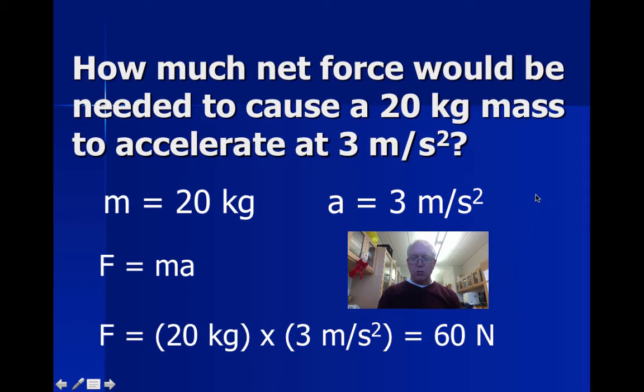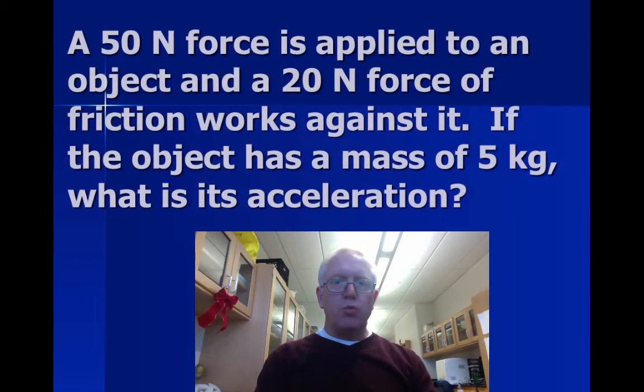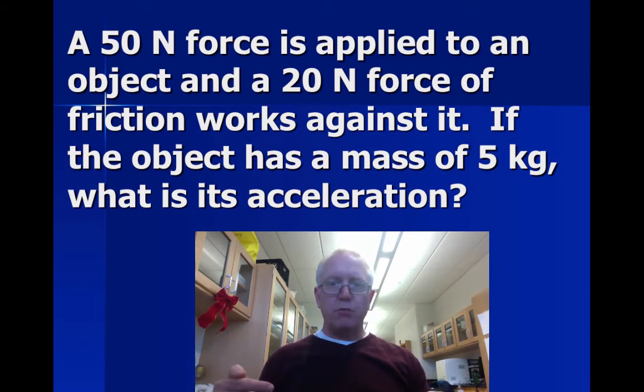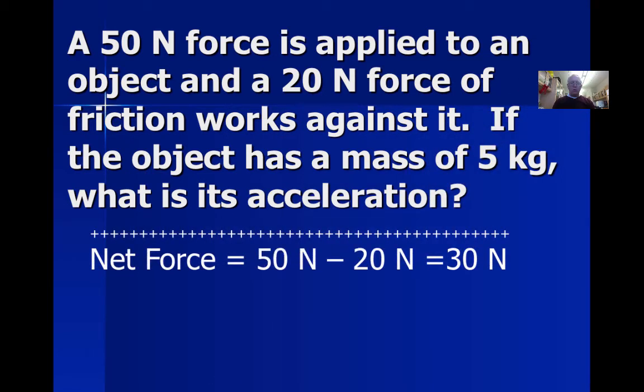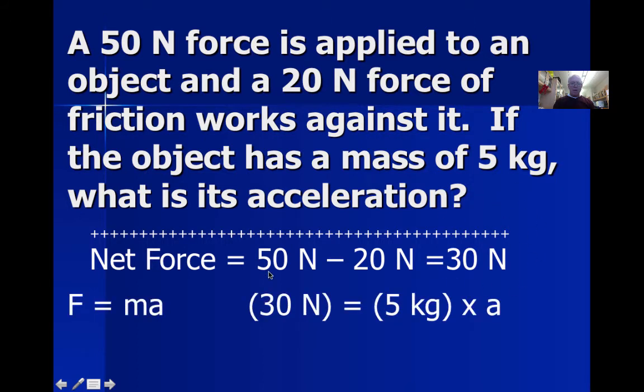Let's try another one. Here's one where you've got an applied force but there's a force of friction, remember the free body diagrams. If the mass is five kilograms, what's the acceleration? We have to take into account the net force. Just like the tug-of-war, this involves subtraction. The net force of 50 minus 20 means we have a net force of 30 newtons. Using F equals ma, 30 divided by 5 gives us an acceleration of six meters per second squared.